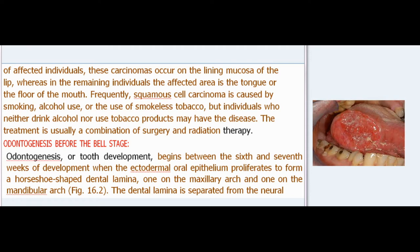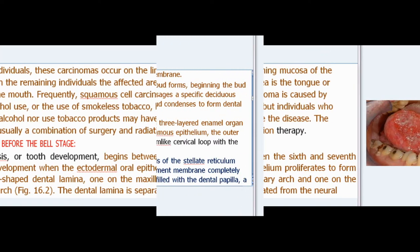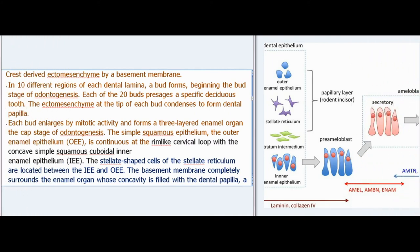Odontogenesis, or tooth development, begins between the sixth and seventh weeks of development when the ectodermal oral epithelium proliferates to form a horseshoe-shaped dental lamina — one on the maxillary arch and one on the mandibular arch. The dental lamina is separated from the neural crest-derived ectomesenchyme by a basement membrane.